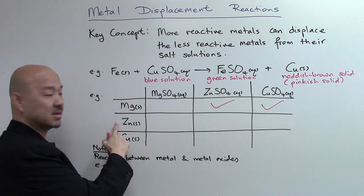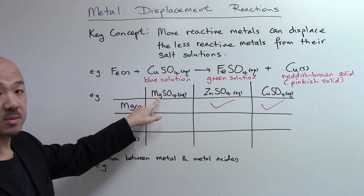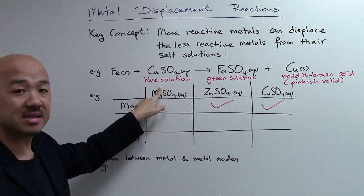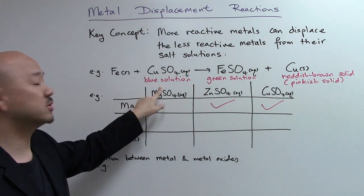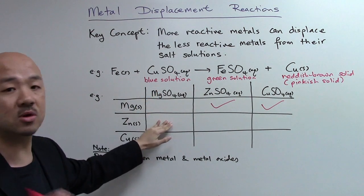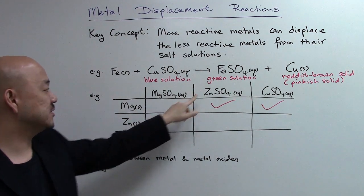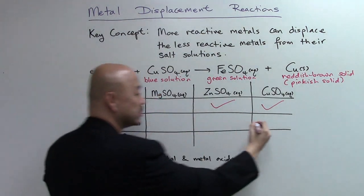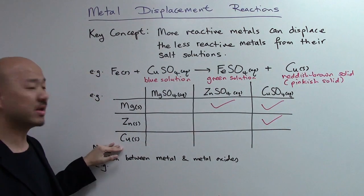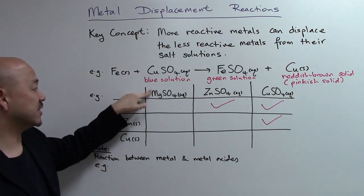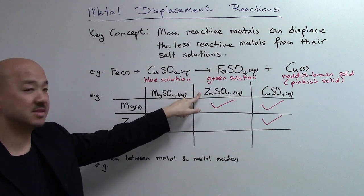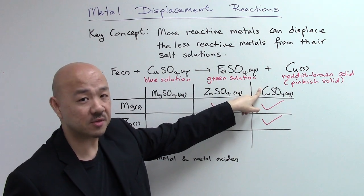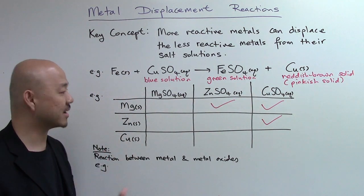What about zinc? Zinc is less reactive than magnesium, so it will not be able to displace the magnesium out — no reaction there. Zinc with zinc sulfate is the same metal, no reaction again. But zinc can displace copper out from copper sulfate. What about copper? Copper is less reactive than magnesium — cannot displace. Copper is less reactive than zinc — cannot displace. Copper is the same metal as the metal ion in copper sulfate, so again there's no reaction.